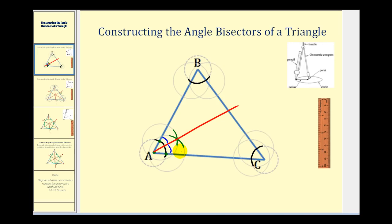Now we'll do the same at vertex B. We'll put the point of the compass at this intersection point and swing an arc in the interior of the angle, which would look something like this. Then move the point of the compass over to this point of intersection and swing another arc in the interior of the angle, something like this.